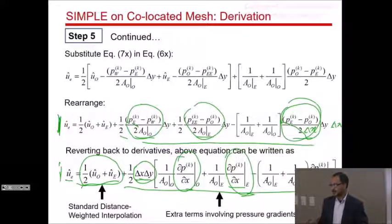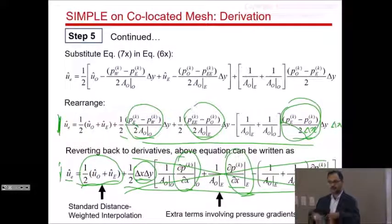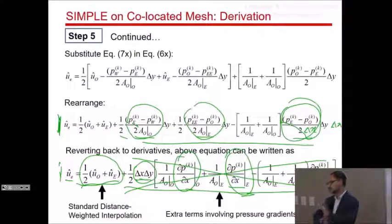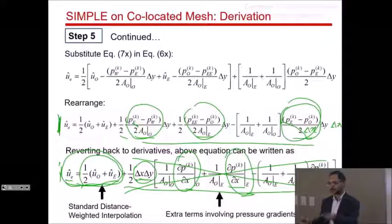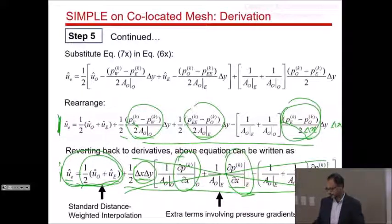For the very first iteration, we don't want to use the pressure-gradient terms because the pressure is just a guess. A wild pressure guess would give a wild face velocity. So for the first outer iteration we throw away those extra terms and just use the linear interpolation part. In successive iterations, once the pressure field has been calculated, we use the full PUIM formula.